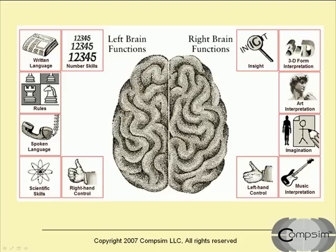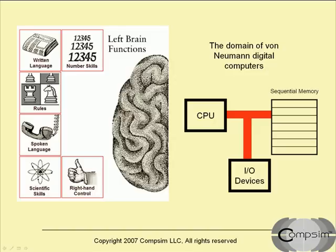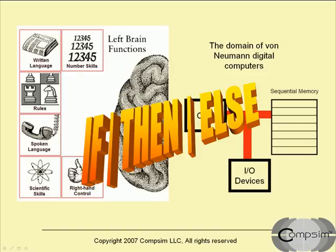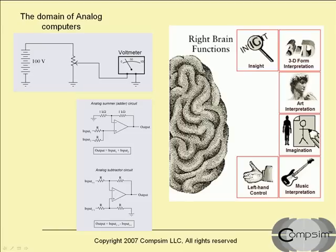Now I want to focus on what we mean by reasoning. This slide shows the functionality of the two hemispheres of the human brain. The left brain equates to the functionality commonly provided with conventional von Neumann digital computers — language, rules, and numbers are handled with if-then-else logic, and information is processed sequentially. The right brain has to do with the interpretation of information. The relative importance of different pieces of information can be managed by analog logic. Judgment and reasoning have to do with the interpretation and integration of multiple pieces of information. In analog systems, like the human right brain, information is processed in parallel.